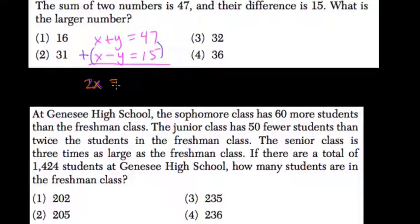47 plus 15. Well, 47 plus 10 is 57, plus 5 is 62. 2x equals 62.